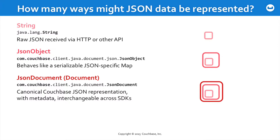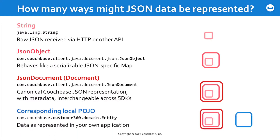That format is then commonly wrapped in what is called a JSON document, which derives from the base document class. This is the canonical representation of JSON within the Couchbase SDK, and its API is consistent across all of our SDKs. It has the JSON object within it, but it also contains the metadata related to that JSON. You may also have other representations — POJOs or entity objects that hold data needing to be serialized and deserialized from native application state into JSON for interchange purposes.